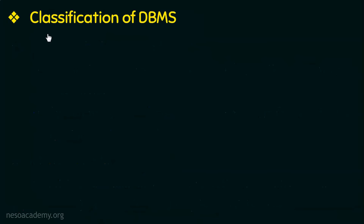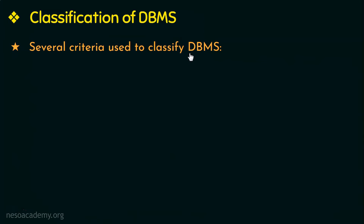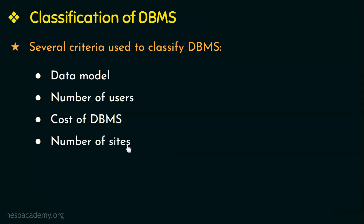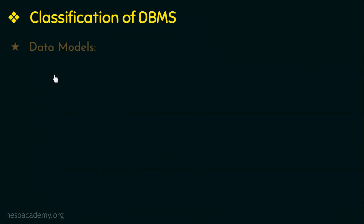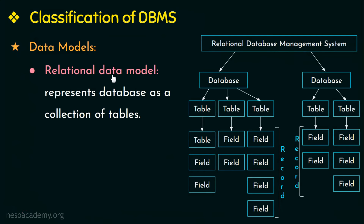Next let us look into the classification of database management systems. There are several criteria used to classify DBMS, such as data model, number of users, cost of DBMS, number of sites, types of access path, and generality. The most popular data model used today is the relational data model, used by systems like Oracle and MySQL. This model represents the database as a collection of tables having fields or attributes.